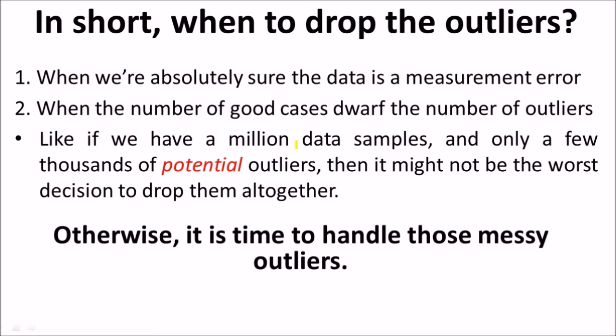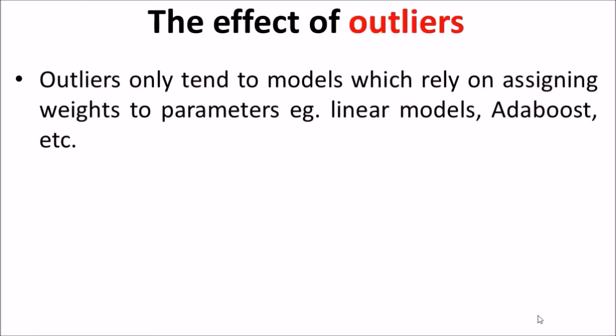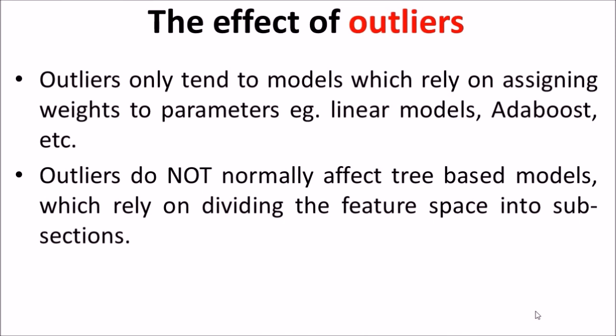Outliers only tend to affect models which rely on assigning weights to parameters — for example, linear models or AdaBoost — because those weights can skew results significantly. Outliers do not normally tend to affect tree-based models, because they rely on dividing the feature space into subsections. A tree-based model divides the data space so that if a value is less than a threshold it is class A, and if greater it is class B. Hence, outliers do not tend to affect tree-based models in the same way.